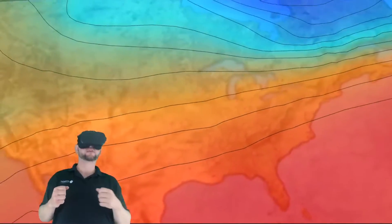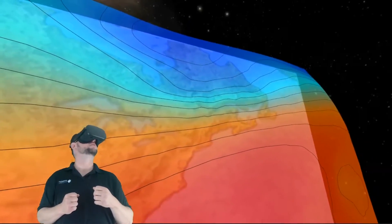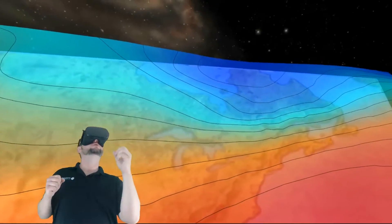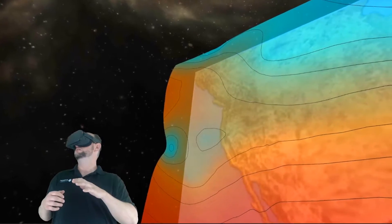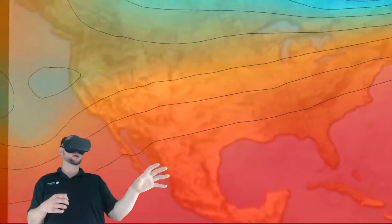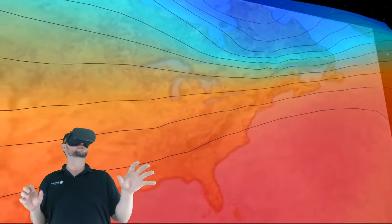So what we're looking at right now is 500 millibar height levels. And where it's blue, greenish to blue, it represents lower geopotential heights. Where it's red, like right here, you're looking at higher geopotential heights.